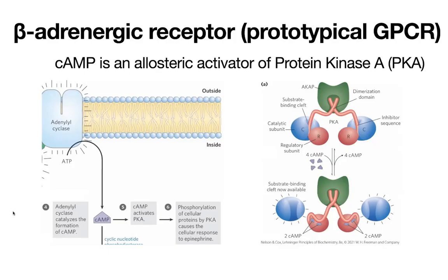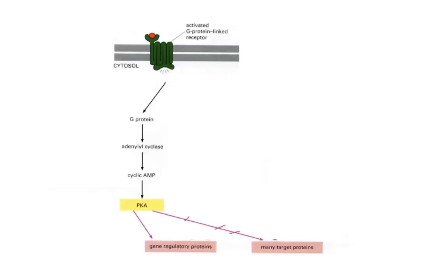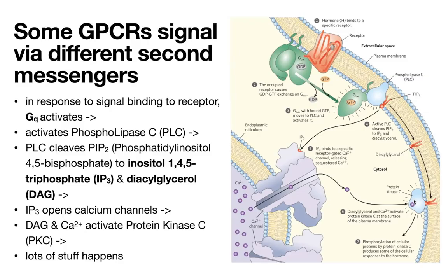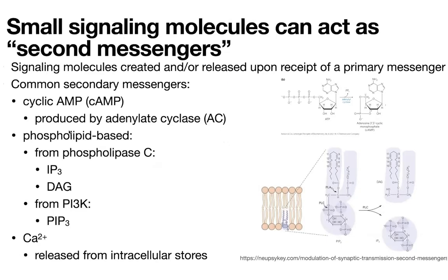Adenylyl cyclase is then able to produce cyclic AMP — our second messenger — which can then go and activate things like protein kinase A, which can activate other things. Alternatively, it can activate a protein like PLC, which is basically going to lead to the production of IP3 and DAG, which then act through a different pathway.